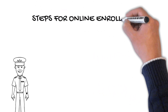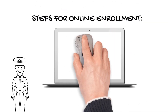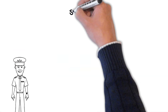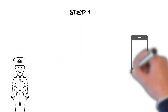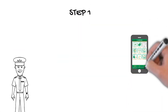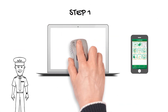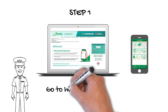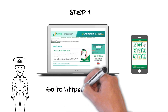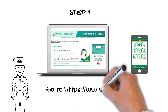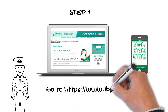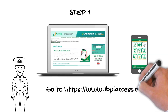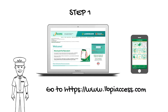To enroll online, follow these instructions. Step 1: Using your smartphone or computer, go to the LandBank iAccess portal through this URL: www.lbpiaccess.com.